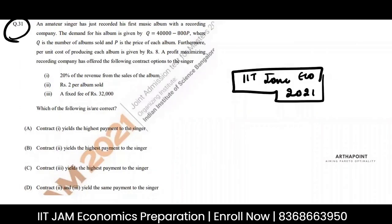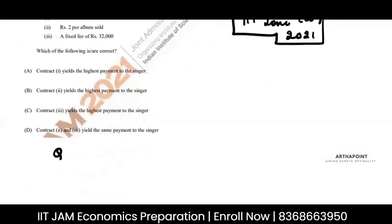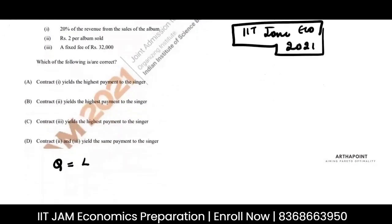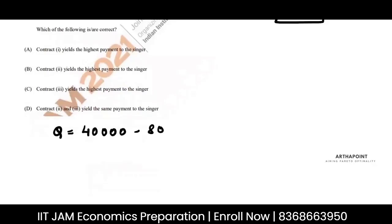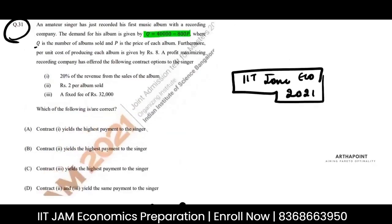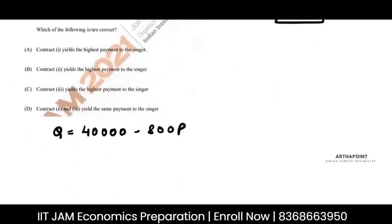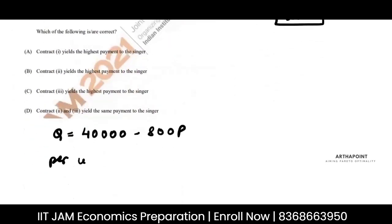An amateur singer has just recorded his first music album with a recording company. The demand for his album is given by Q = 40,000 minus 800T, where Q is the number of albums sold and T is the price of each album. The per unit cost of producing the album is ₹8, so total cost will be 8 times Q.